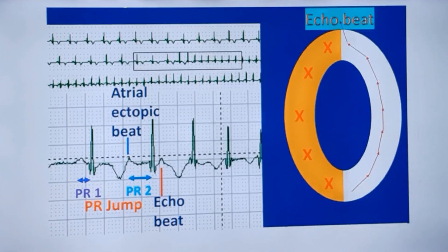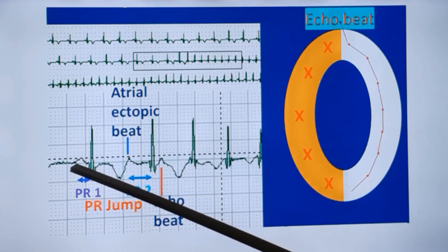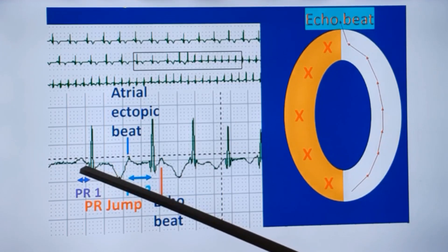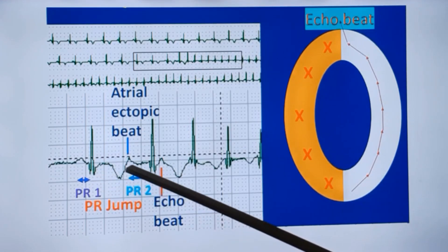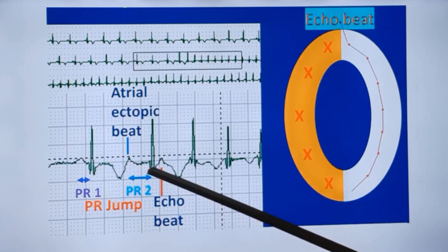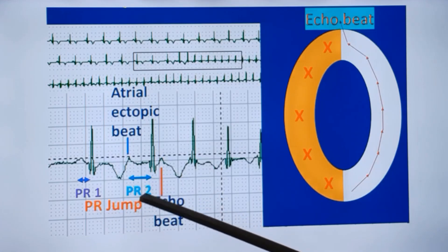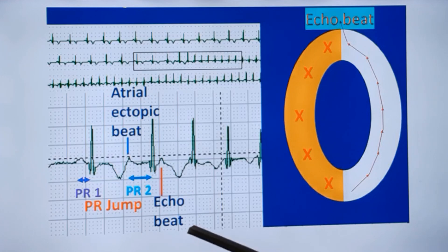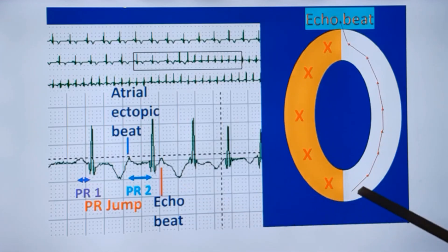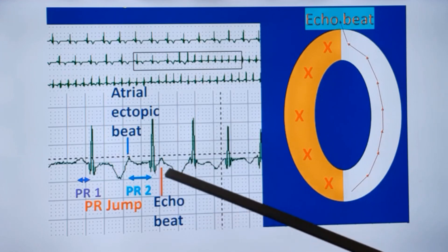That is the mechanism of the PR jump. For the sinus beat, this is normal conduction through the fast pathway. And the atrial ectopic beat is conducted down the slow pathway, producing a longer PR interval. This difference is known as the PR jump. If it is more than 50 ms, it indicates dual AV nodal pathway physiology. And when it is again conducted back into the atria, it causes an echo beat.